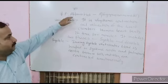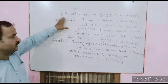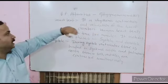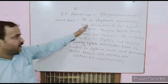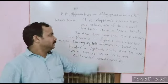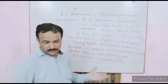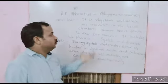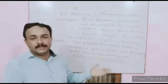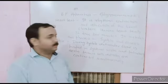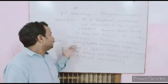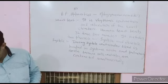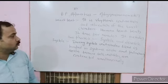We measure blood pressure using an apparatus called a sphygmomanometer. The heartbeat is the rhythmic contraction and relaxation of the heart chambers. The heart beats 72 times per minute. It includes two phases: systole and diastole.